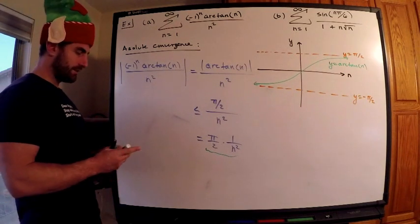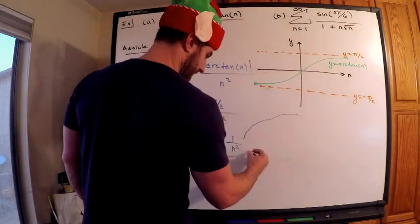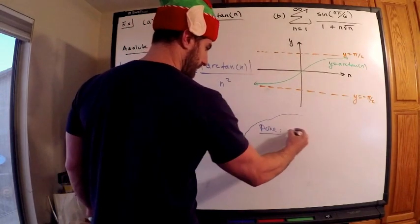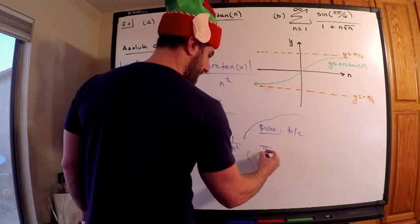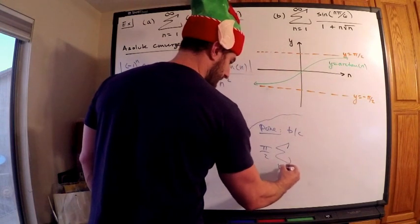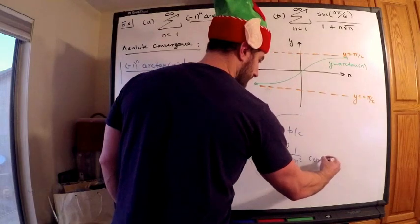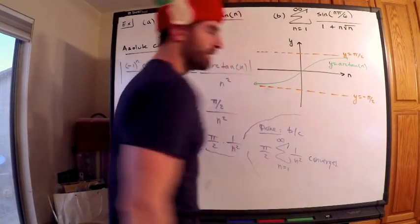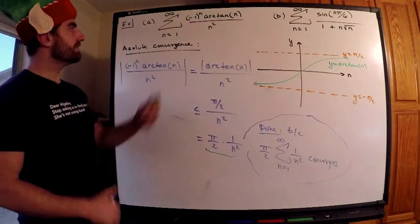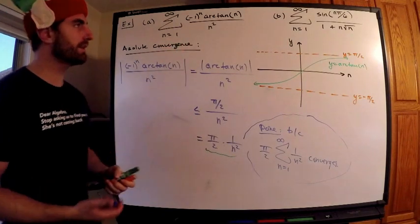So this converges p-series, right? So here's just a little thought. We're done because pi over 2. It doesn't matter if I have pi over 2 out there, because this converges. n equals 1 to infinity, 1 over n squared converges. So write out the logical steps here. But basically, what did I just show? Now, this converges absolutely. This converges absolutely, which means the original series converges. That's just an implication there.